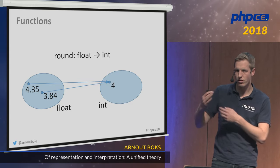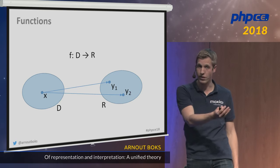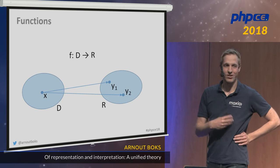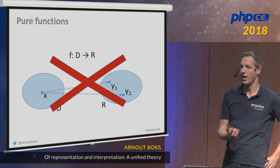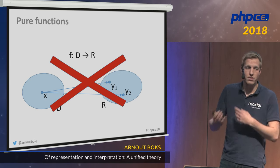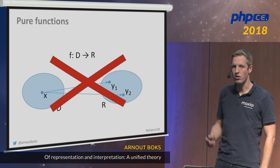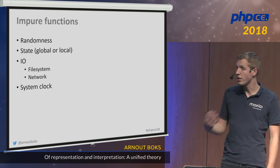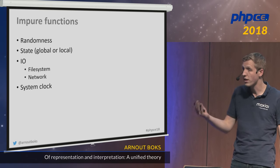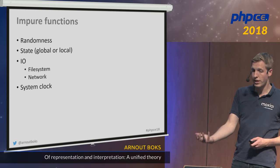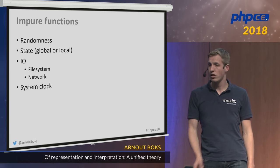Can we do the reverse — can one input value map to two different output values? Mathematically this is impossible in a pure function, and strict languages like Haskell don't allow it. But in programming it is possible in an impure function — a function that depends on randomness, global or local state, or I/O. For example, file_get_contents with the same filename could return different outputs if the file's contents changed, or if the function depends on the system clock.